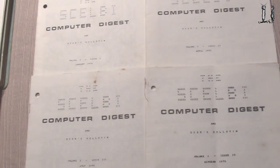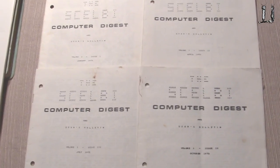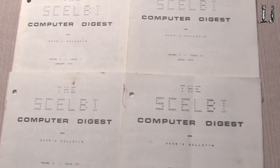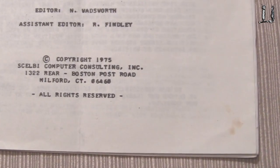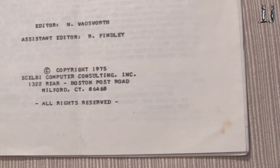And I understand there were only four newsletters that were ever written, the Selby Computer Digest. He sent all four issues along. There was number one and four. And of course, these were written by Nat Wadsworth and Robert Finley.